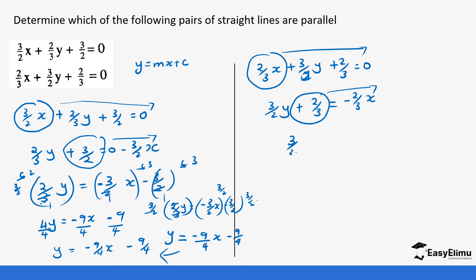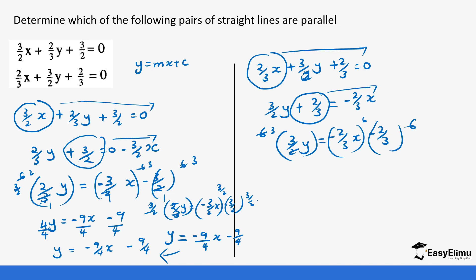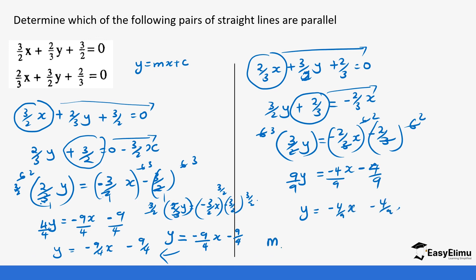We take the positive (2/3) to the other side: (3/2)y = -(2/3)x - (2/3). The LCM of the denominators is 6, so we multiply everywhere by 6. This gives us 9y = -4x - 4. Dividing by 9 all sides: y = -(4/9)x - (4/9).